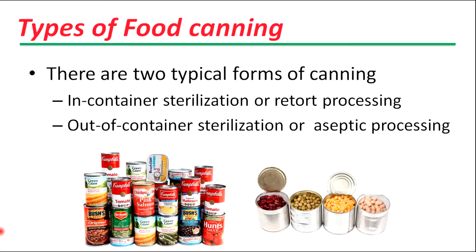There are two types of canning. They are in-container sterilization or retort processing, and out-of-container sterilization or aseptic processing. In-container sterilization heats packed product in containers such as metal cans or glass jars using a retort process with steam until the center of the product reaches the required temperatures for a sterilized product. Accordingly, both package and product are sterilized together. Retort processing can be applied to all types of foods. Out-of-container sterilization refers to separate sterilization of food and product, and then packaging or filling and sealing under specific aseptic conditions. Aseptically processed food is limited to liquid foods.